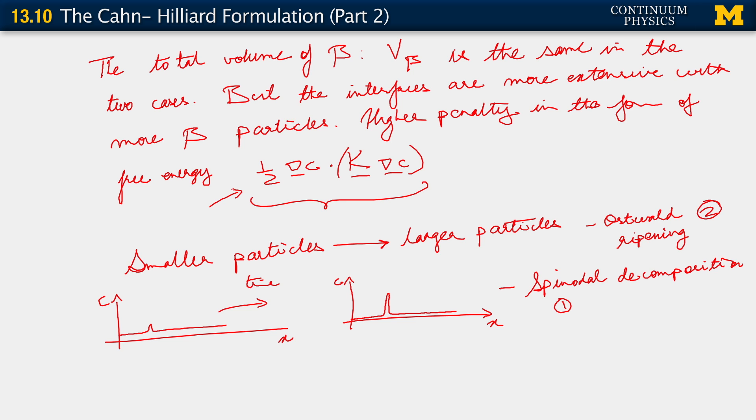So problems of phase separation first show spinodal decomposition. And once these different beta and alpha particles form, they show this process of Oswald ripening. Everything driven by this, by this sort of term. And without that term, problems of phase separation are mathematically ill-posed, and physically wrong. So, we've seen the PDE. What about boundary conditions?